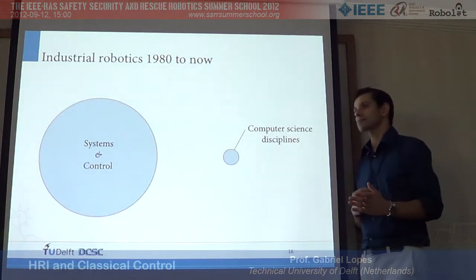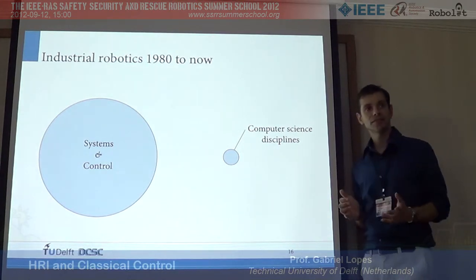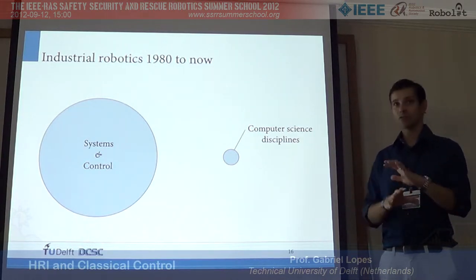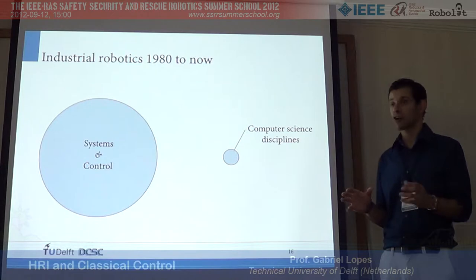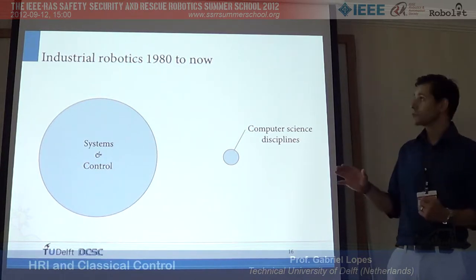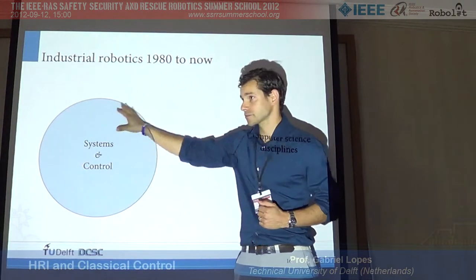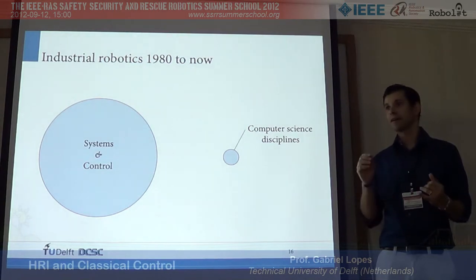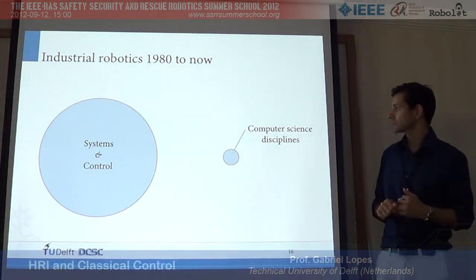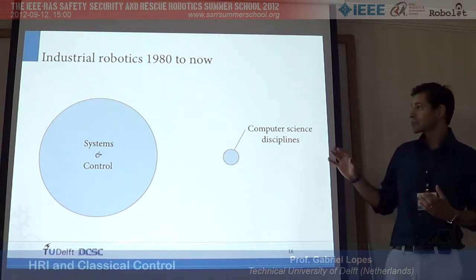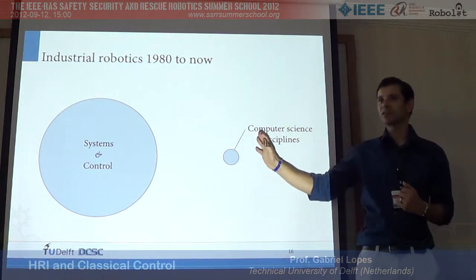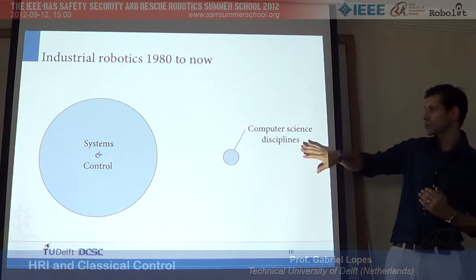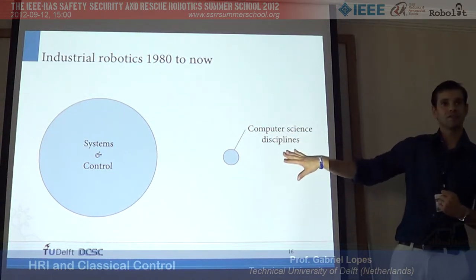If you look at industrial robotics starting in the 80s, you have repetitive, high-precision tasks — things that are very nicely done in the context of systems and control. Development is mostly done there, with a little bit of computer science disciplines like planning, learning, and perception. In industrial robotics it's shifted towards systems and control mostly because of the performance needed, and because environments are very engineered. But when I look at the current state of autonomous robots, I have a feeling that the weight has shifted a lot towards the computer science side.